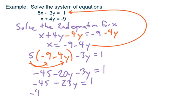Add 45 to both sides, so negative 45 minus 23y plus 45 equals 1 plus 45, that will give me negative 23y equal 46.